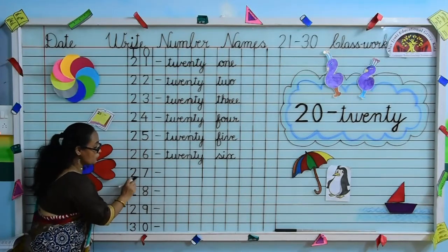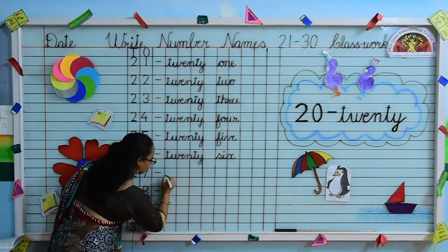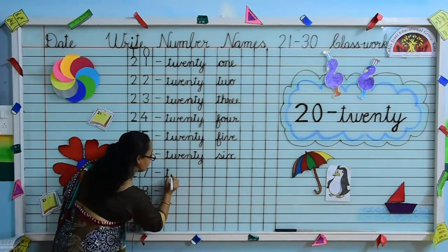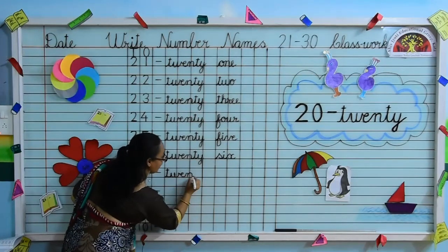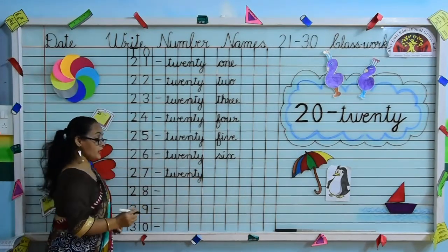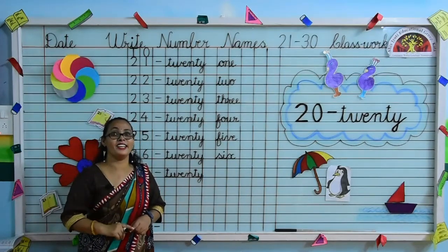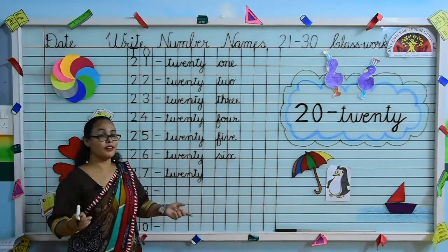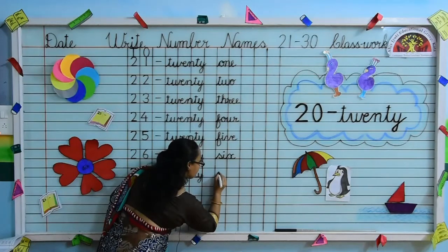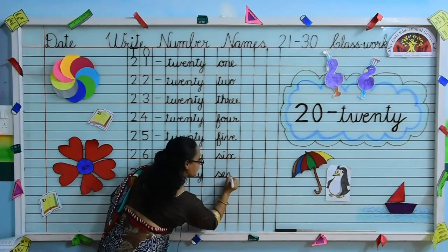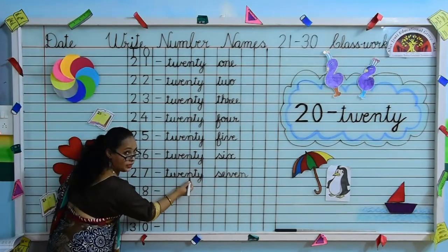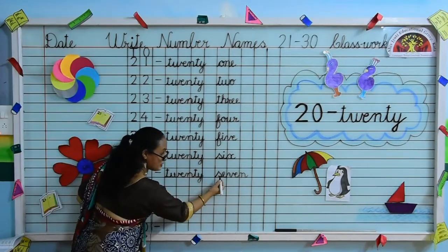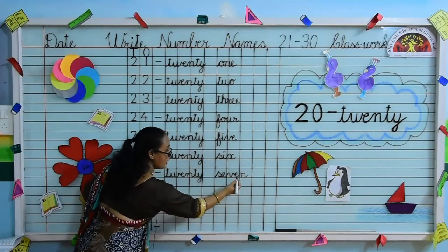Move to next number. 2, 7 — 27. Speak and write. T-W-E-N-T-Y, 20. Yes kids, can you tell me what is the spelling of 7? Yes. S-E-V-E-N, 7. So speak and write. S-E-V-E-N, 7. T-W-E-N-T-Y, S-E-V-E-N, 7.